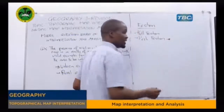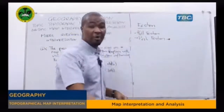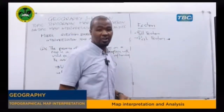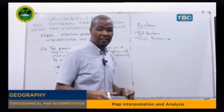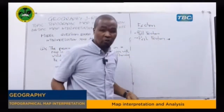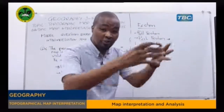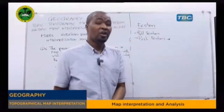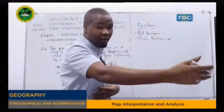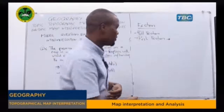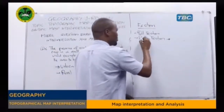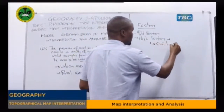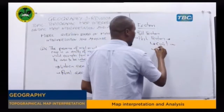The push factors are the factors that remove people from the area of origin to a certain destination. It means there is a factor that causes you to move from where you are to somewhere else because you do not want to stay in the area of origin. Examples of push factors include civil war and unemployment.